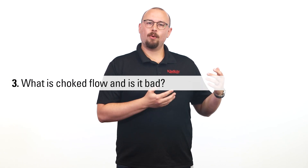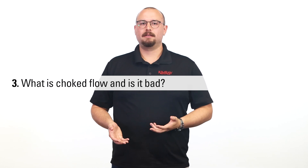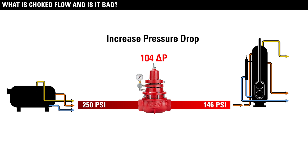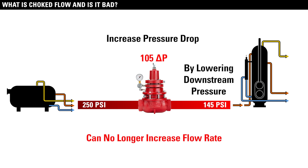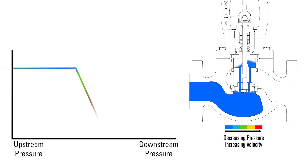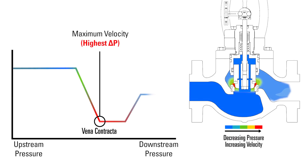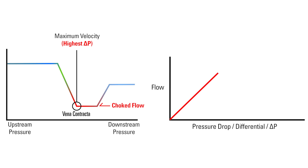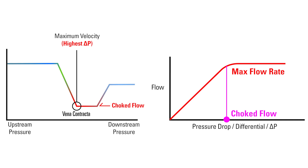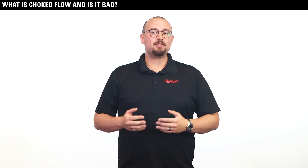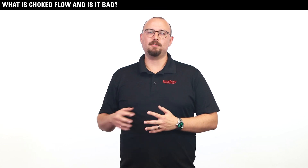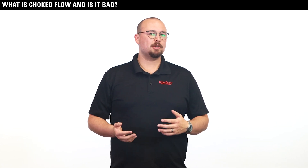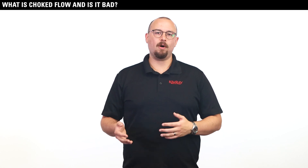Question three is related: what is choked flow and is it bad? There comes a point, if you're increasing the pressure drop by lowering the downstream pressure, that you're not going to increase the flow rate. The fluid will reach its maximum velocity at the vena contracta, and after that point it will enter a state called choked flow. The higher the pressure drop is, the more flow you can get across a given orifice size. If you want to increase the volume using the same valve and equipment but you have it in choked flow, you won't be able to. This creates problems because you can't pass the amount of volume you need, and depending on the application, you might be starving another piece of equipment that needs volume to operate correctly.